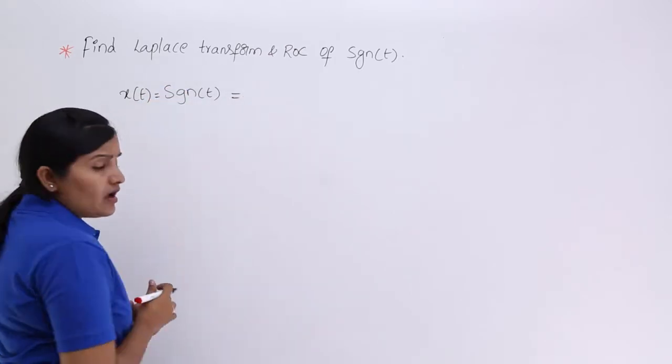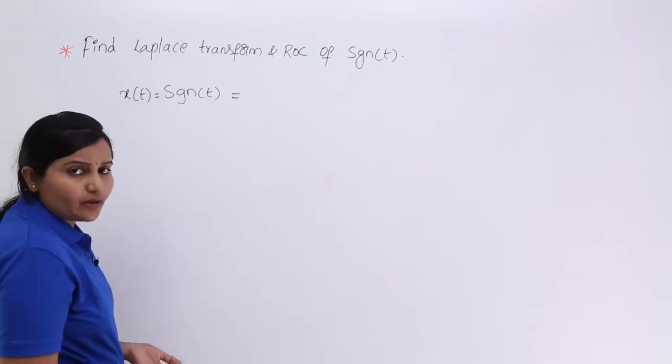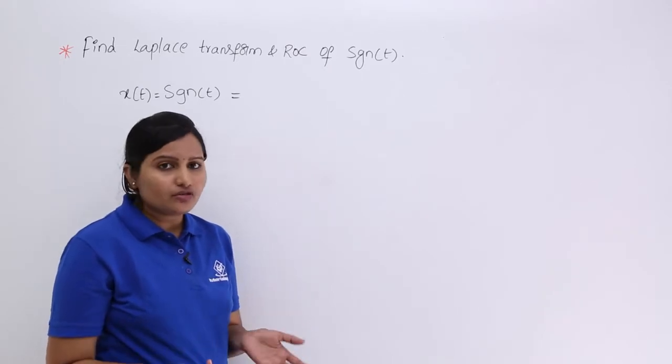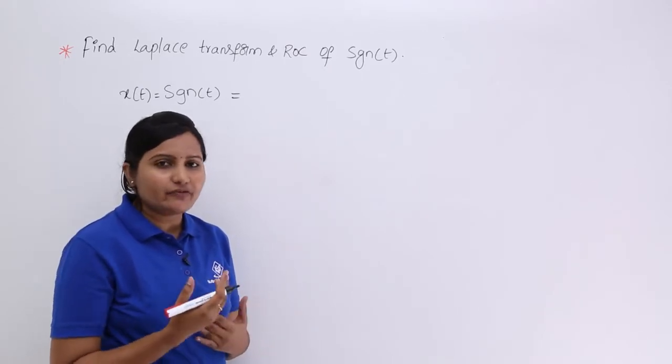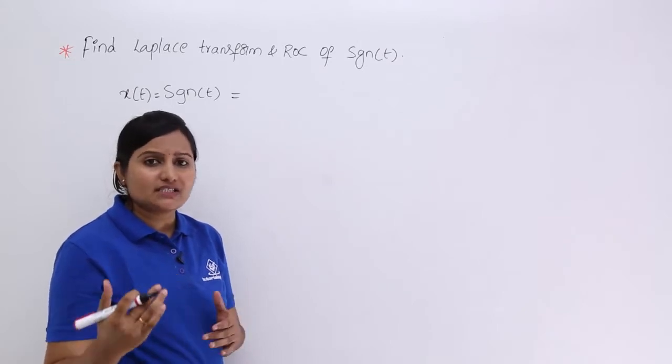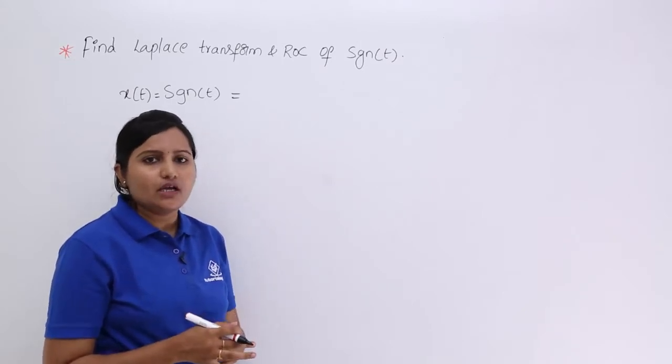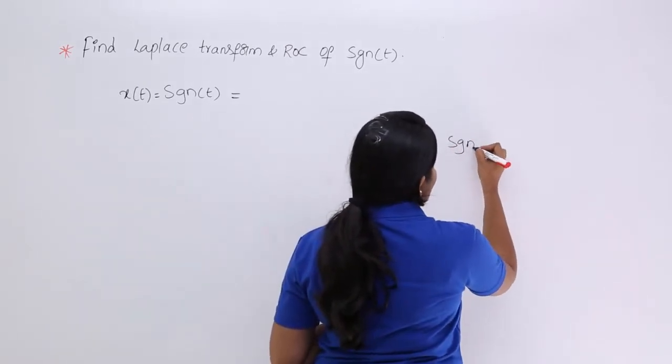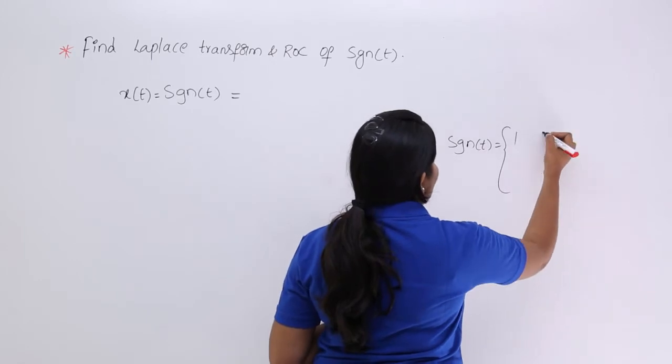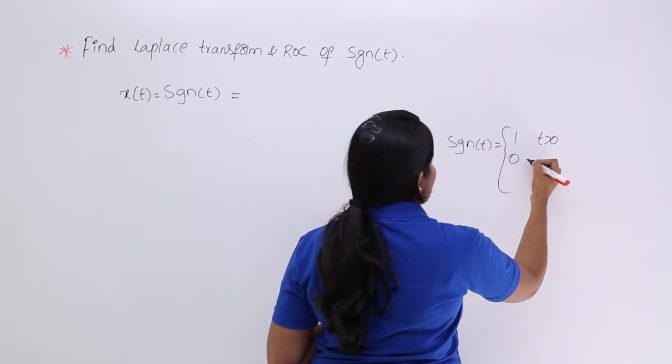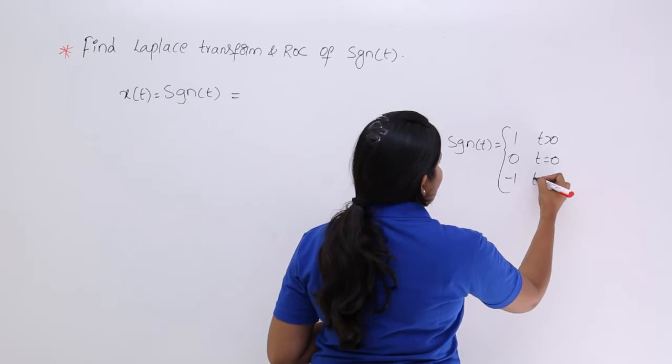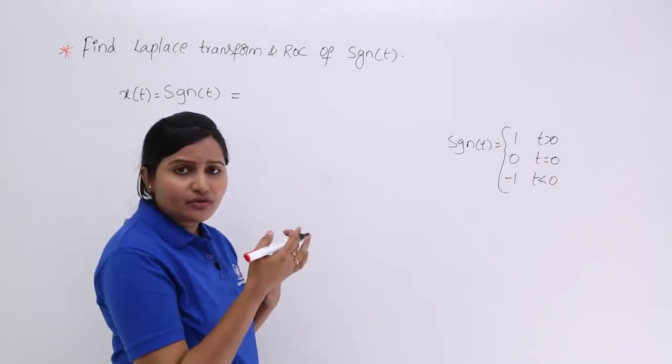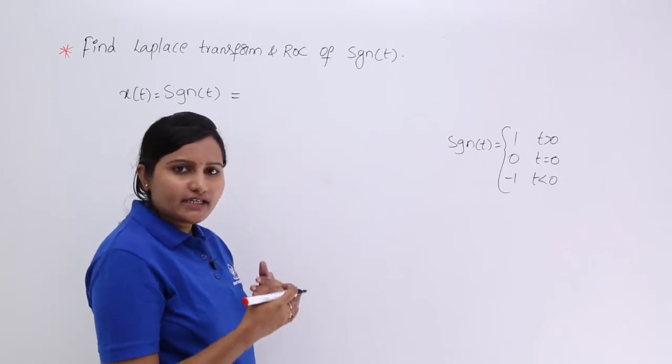For this I want to consider it in terms of unit step. If you consider the standard formula, you would calculate the integral from minus infinity to infinity of signum function times e to the power minus st dt. For that signum function, you would go to the definition: that is equivalent to 1 when t greater than 0, 0 when t equals 0, minus 1 when t less than 0, and you need to separate into 3 integrals.